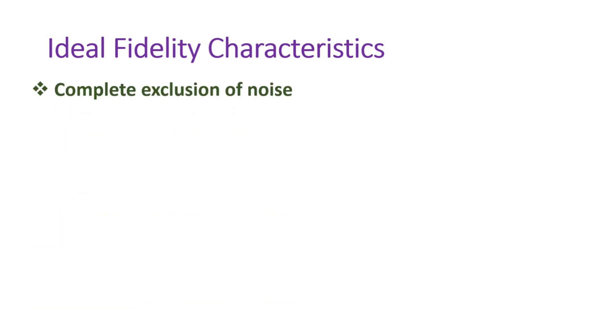Now I'll explain ideal characteristics of fidelity, so it will be more clear what fidelity is. For ideal fidelity, it should have complete exclusion of noise. The system will not give response to any noise which is happening, so there will be complete exclusion of noise in ideal fidelity.